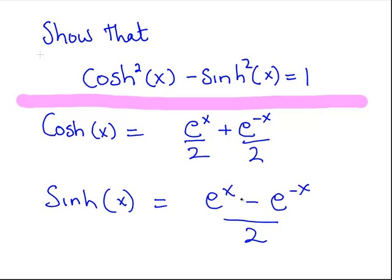sinh x is e to the x minus e to the minus x over 2. And again I'm going to slightly rephrase that. I'm going to put them both over 2 separately. Both terms are equivalent to each other but for our purposes it makes life easy.